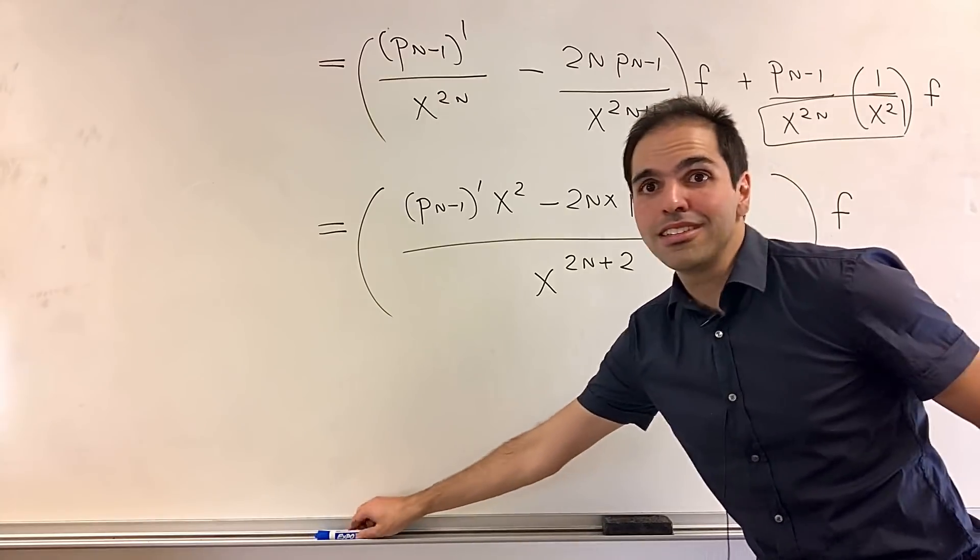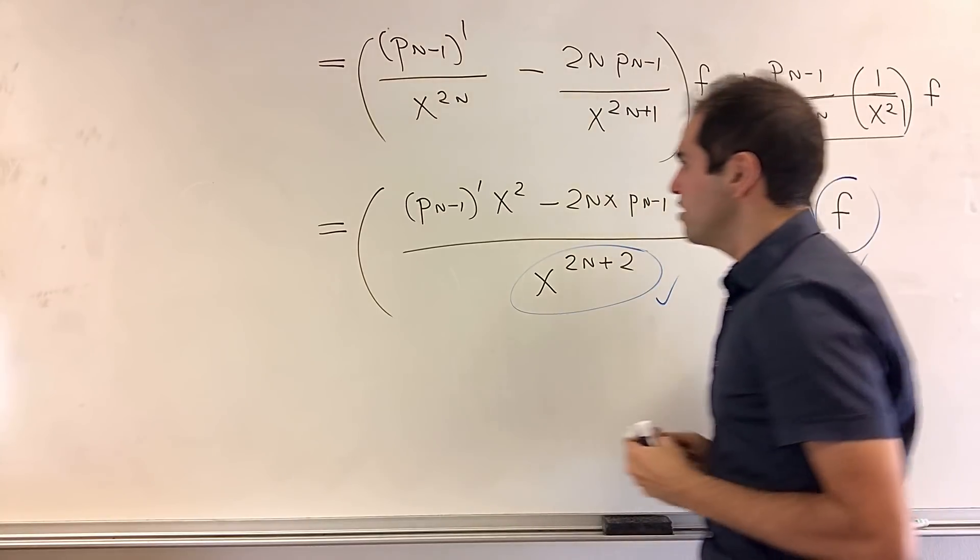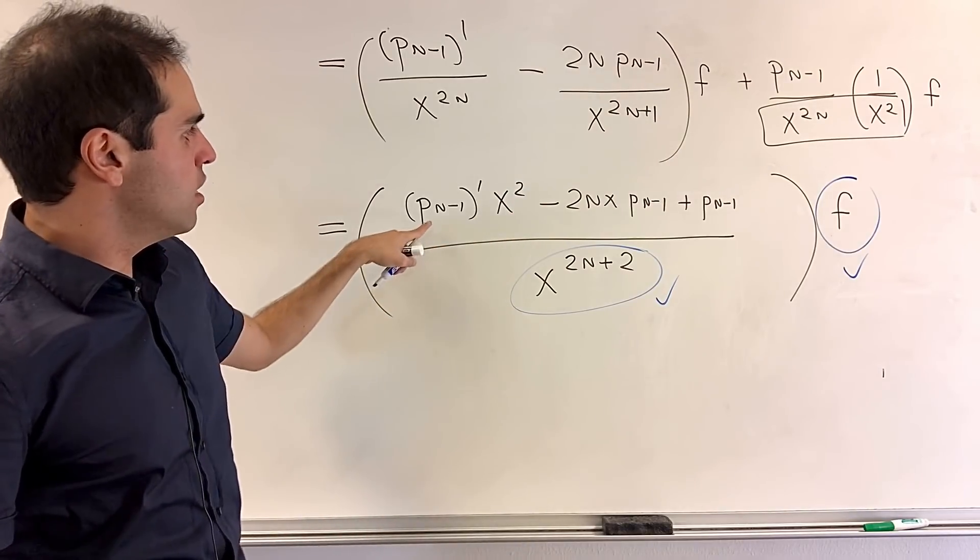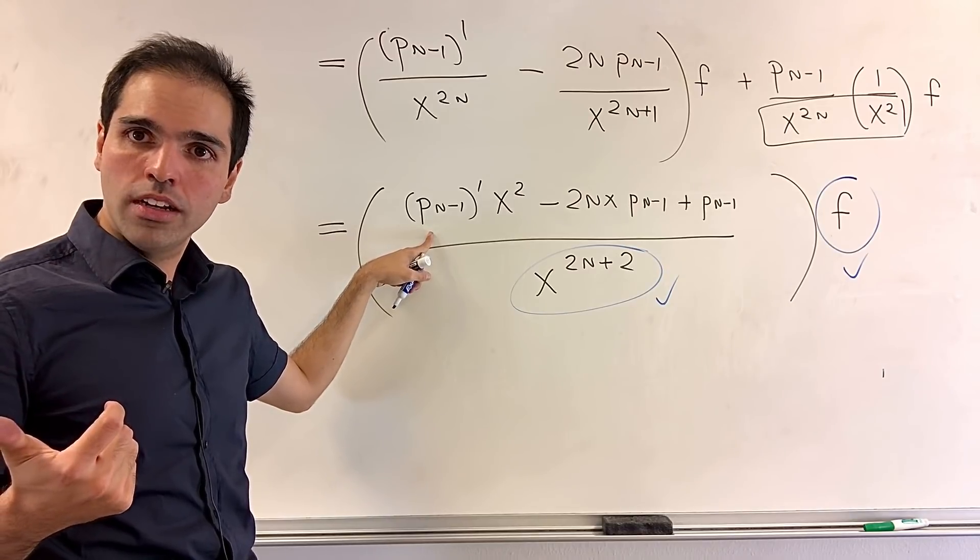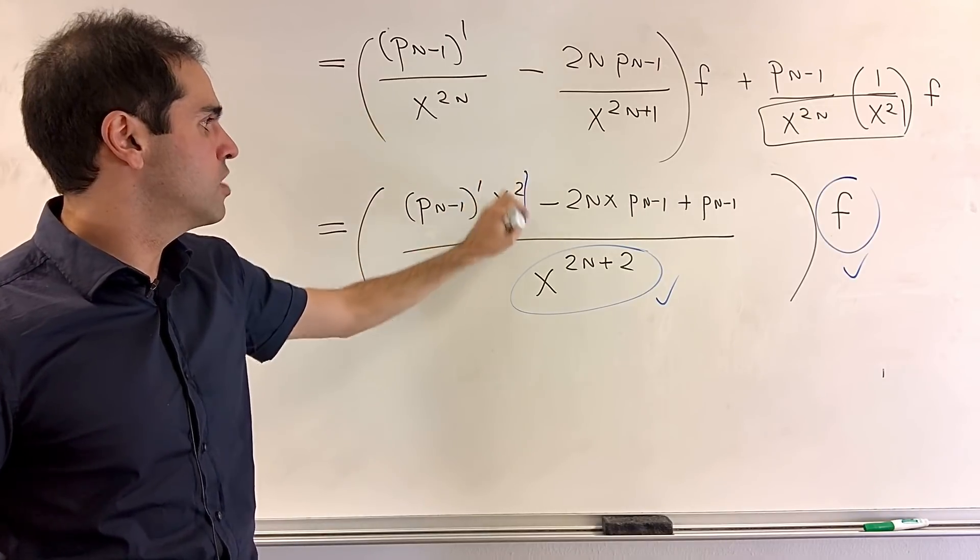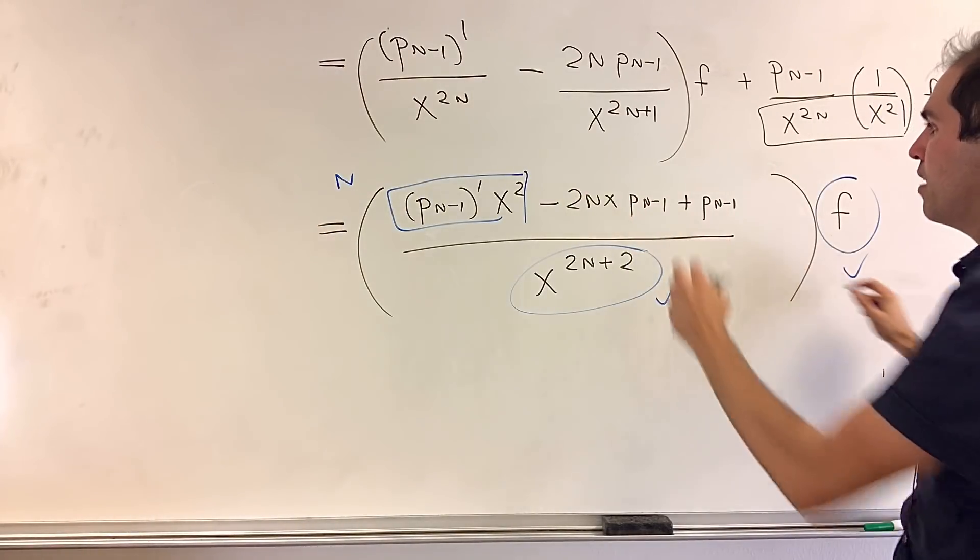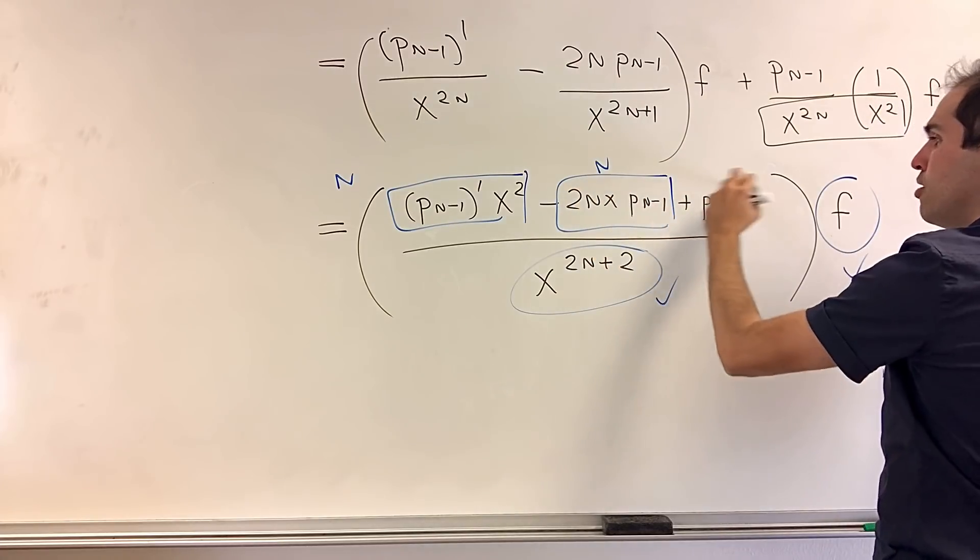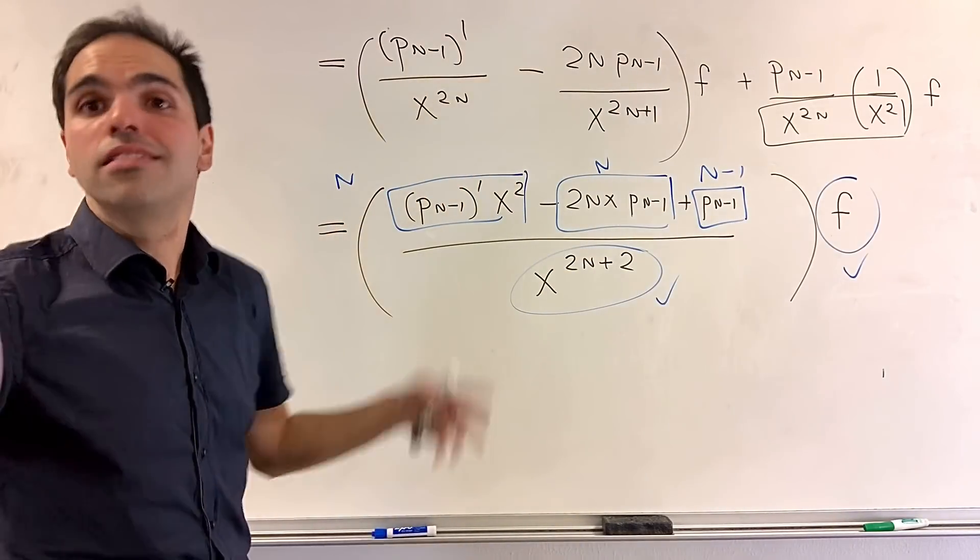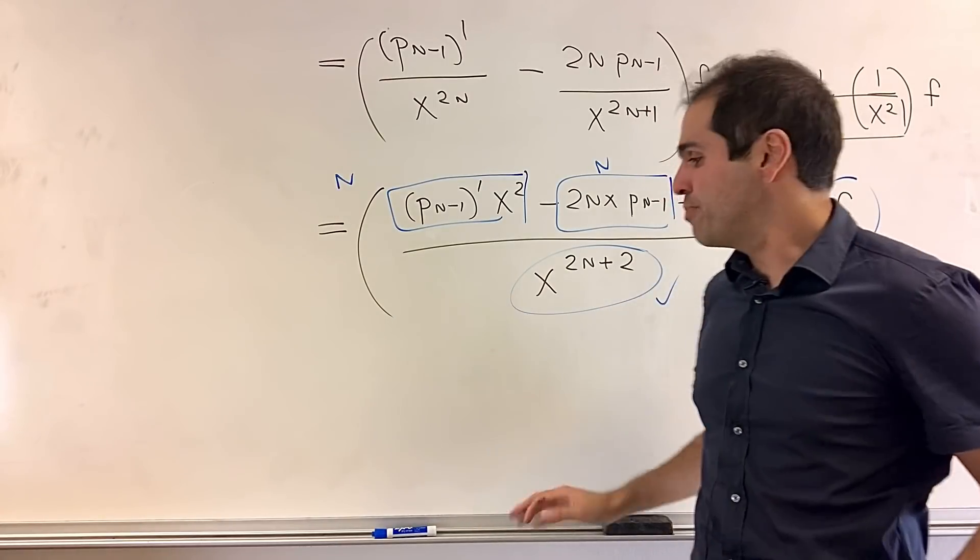All right. And as I said, this is exactly what we wanted, because we have f here. We have here x to the 2n plus 2, so 2 times n plus 1, and then I think all we need to check is that this is a polynomial of degree n, but that's not a problem, because p n minus 1 has degree n minus 1. If you differentiate this, you have degree n minus 2. And then with this x squared, this does become degree n. Now p n minus 1, degree n minus 1, you multiply it by x, and you get n, also degree n, and this thing just has degree n minus 1. So if you add it to an nth degree polynomial, it becomes a degree at most n, which is fine. And so therefore, the first part of our claim is proven.